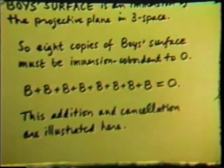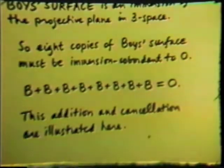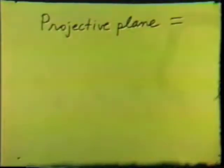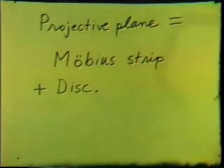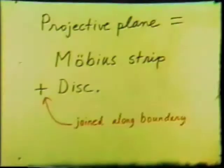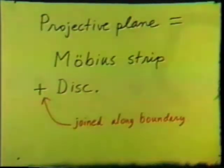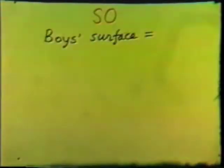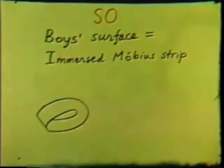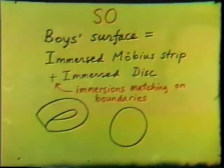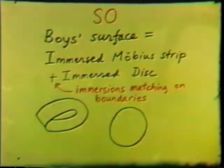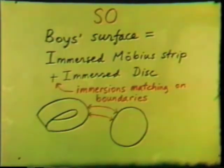This addition and cancellation are illustrated here. The projective plane is a Möbius strip and a disc joined along their boundary. So Boyd's surface is an immersed Möbius strip and an immersed disc, the immersions matching on boundaries.